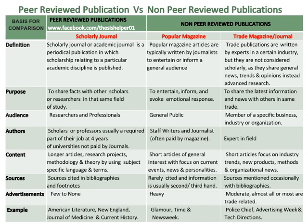Whereas the content of trade publications consists of short articles focused on industry trends, new products, methods and organisational news. Sources in scholarly journals are cited in bibliographies and footnotes, whereas sources in popular magazine articles are rarely cited and information is usually second or third hand. Sources in trade publications are mentioned occasionally with bibliographies.